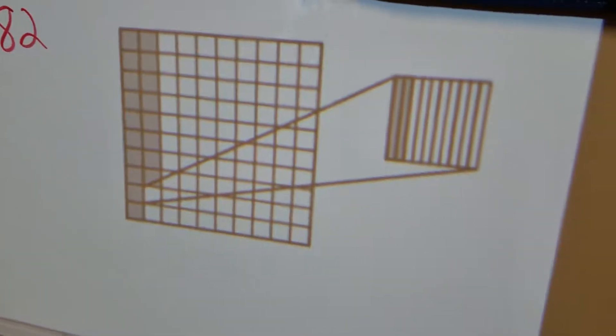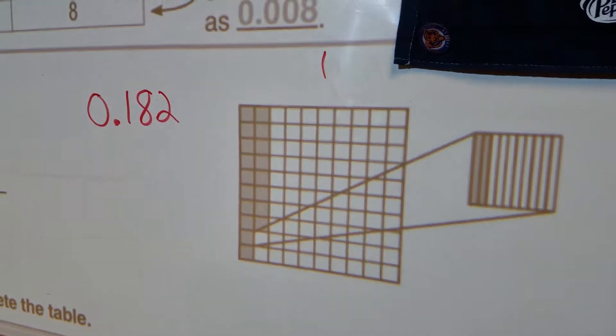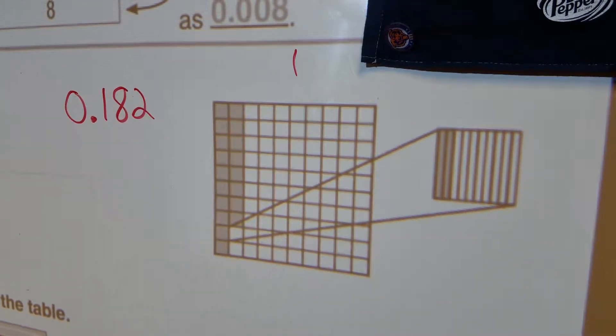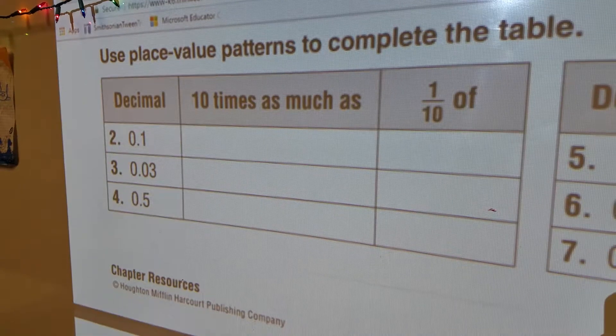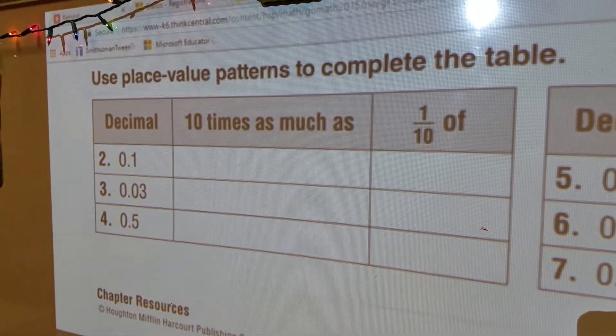that's going to be 2 thousandths. So that shaded model right there is equal to 0 and 182 thousandths. All right,